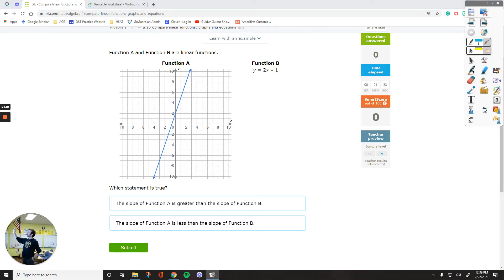Let's get started with this first question. Functions A and B are linear. Which statement is true? We are comparing the slopes of the given two functions. Which one is greater, which one is less than the other?